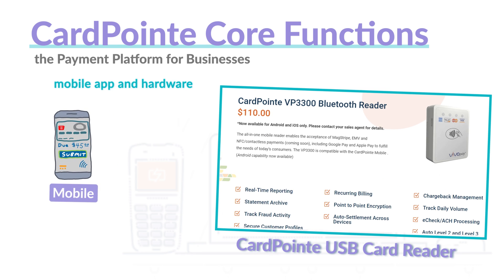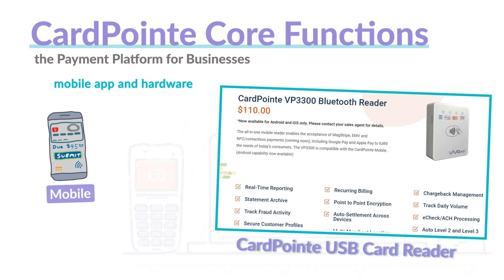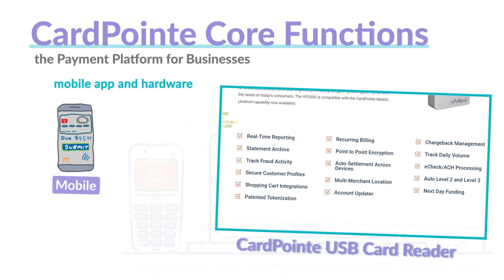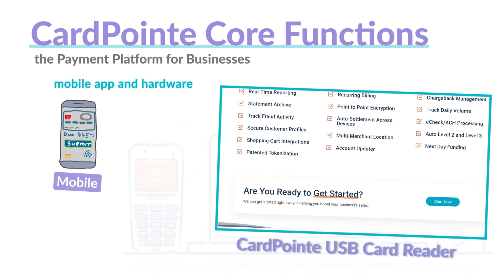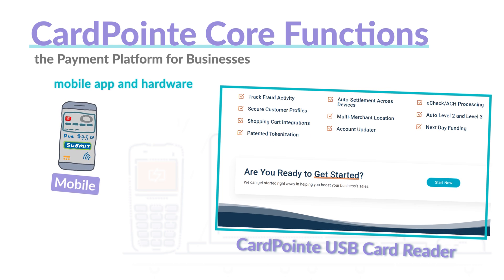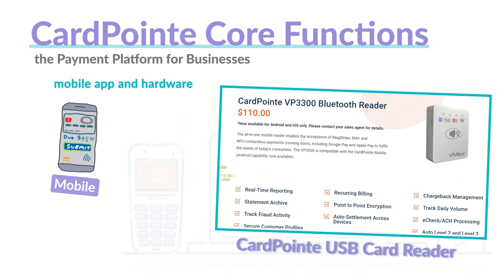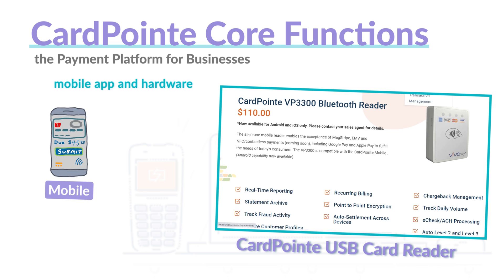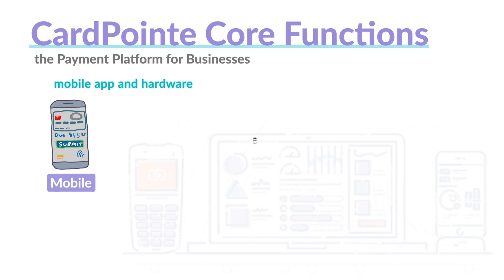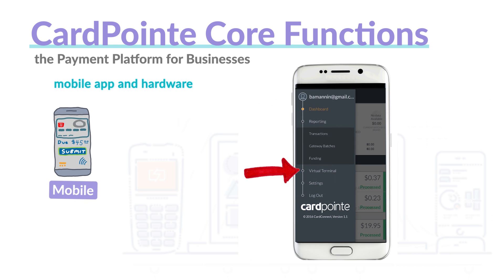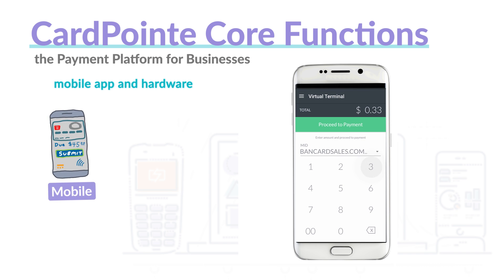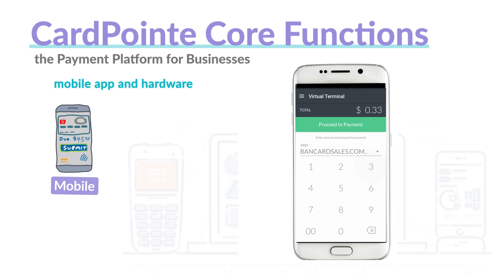For on-the-go payments, the mobile app can be downloaded to any iOS or Android device, and you can check reports, access the product catalog, and process credit card transactions all from the mobile app. Standard functionality supports key entered transactions from Android and iOS devices by selecting the virtual terminal and entering the credit card number to process the sale. The optional Bluetooth card reader is available for iPhone or iPads and supports EMV-swiped and contactless payment acceptance.